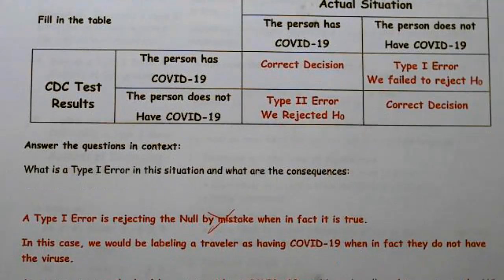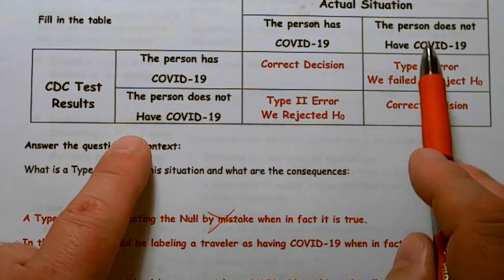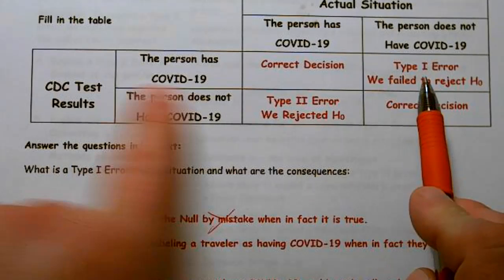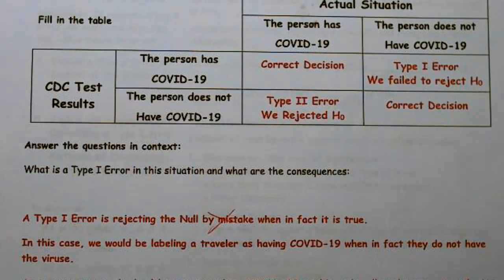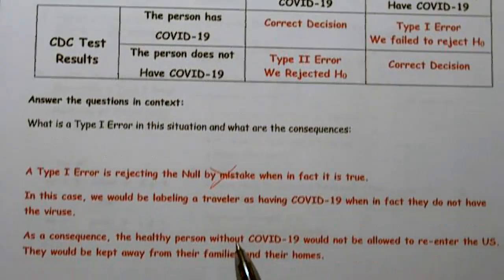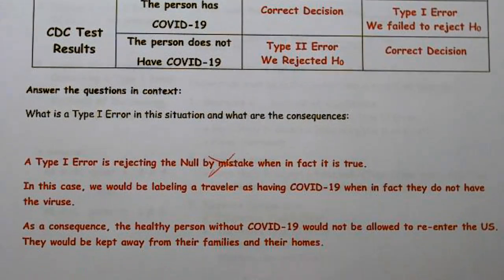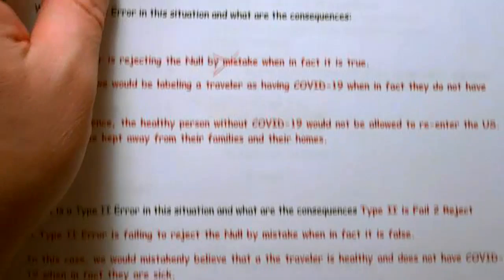So a Type 1 error in this case would be saying they have the virus when they don't — we rejected the null of not having the virus. As a consequence, we would be labeling the traveler as having COVID. A healthy person without COVID-19 would not be allowed to re-enter the U.S. and would be kept away from their families and homes until further notice, because at that time we didn't know what to do.